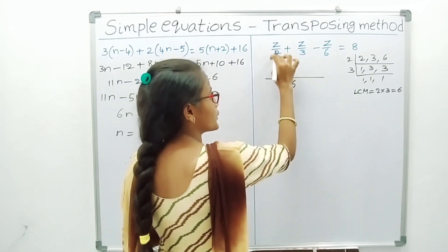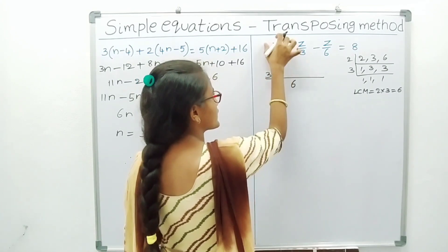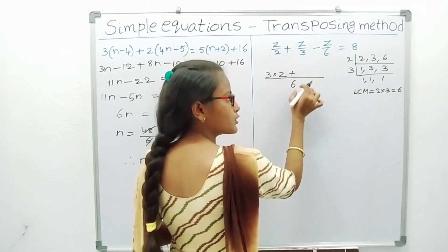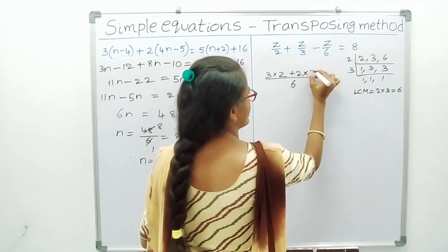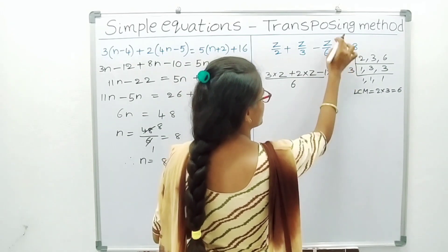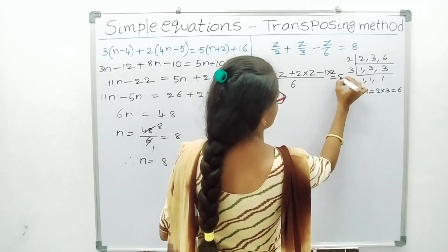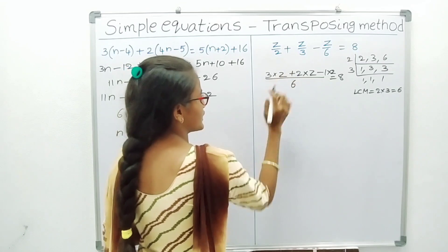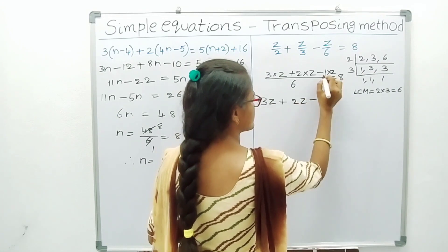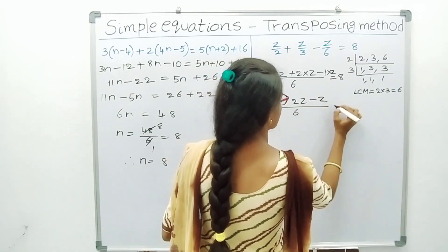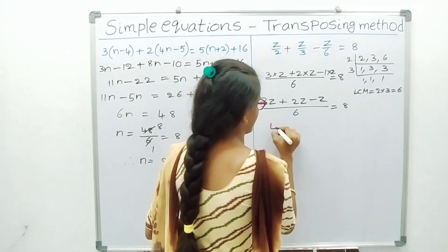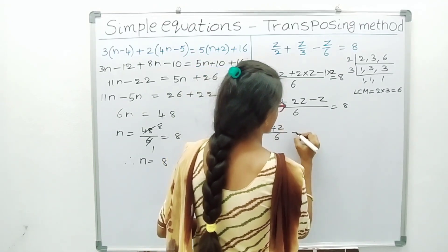Here, how many times does 6 go into 2? 3 times. So 3 into numerator z. Plus is there, so put plus. How many times does 6 go into 3? 2 times. So 2 into numerator z. Minus is there, so put minus. How many times does 6 go into 6? 1 time. 1 into numerator z equals 8. So: 3z plus 2z minus z divided by 6 equals 8. 3z plus 2z is 5z, minus z is 4z. 4z by 6 equals 8.